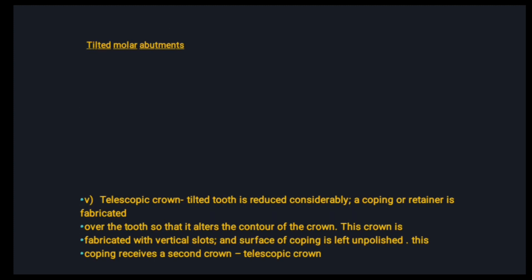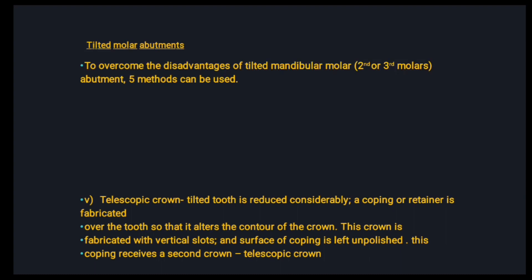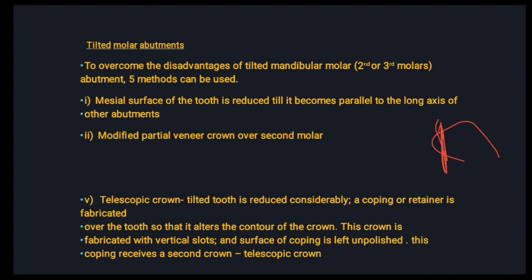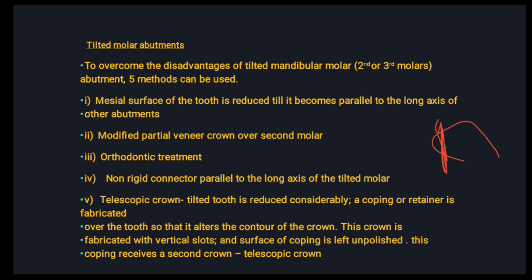Next is tilted molar abutments. Five methods can be used to overcome the situation when we have to use a tilted molar as an abutment. First, the mesial surface of the tooth is reduced until it becomes parallel to the long axis of the other abutments — but this can only be done if there is a tilt of no more than 30 degrees. Second, use a modified partial veneer crown over the second molar. Third, orthodontic treatment. Fourth, a non-rigid connector parallel to the long axis of the tilted molar. Fifth, a telescopic crown.